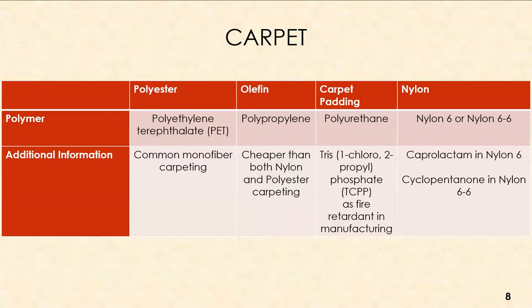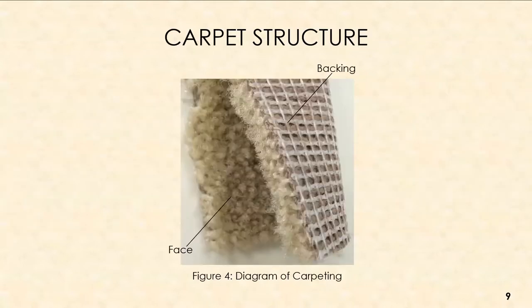Carpet padding is more of a foam that sits underneath the carpet layer. The polymer used in manufacturing is polyurethane, and a natural fire retardant called TCPP (tris-1-chloro-2-propyl phosphate) is applied to it — an additive that impacts the chromatographic profile output. For carpet structure, the face of the carpet peels back and acts as an insulator, exposing the backing made of polyethylene or polybutadiene, which is the majority of what will be burning and visible in the chromatographic profile.